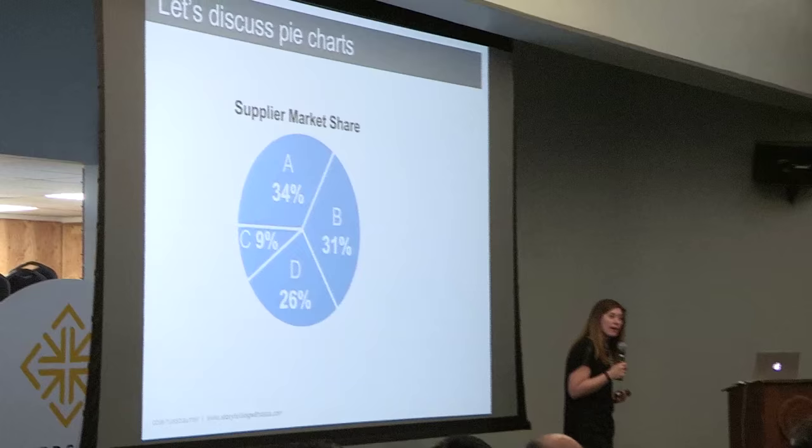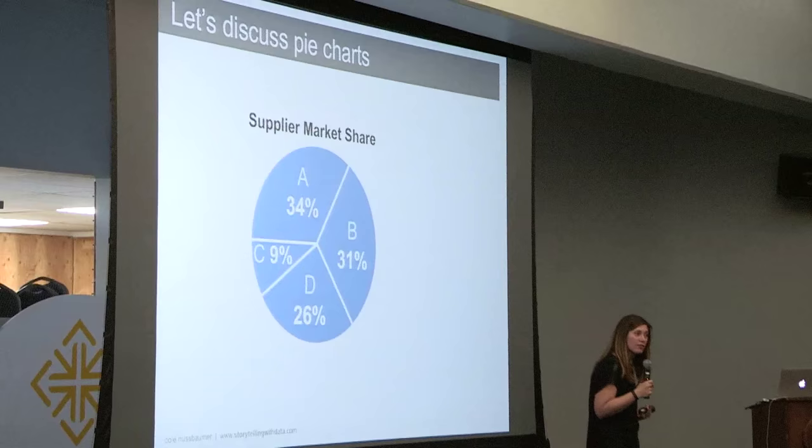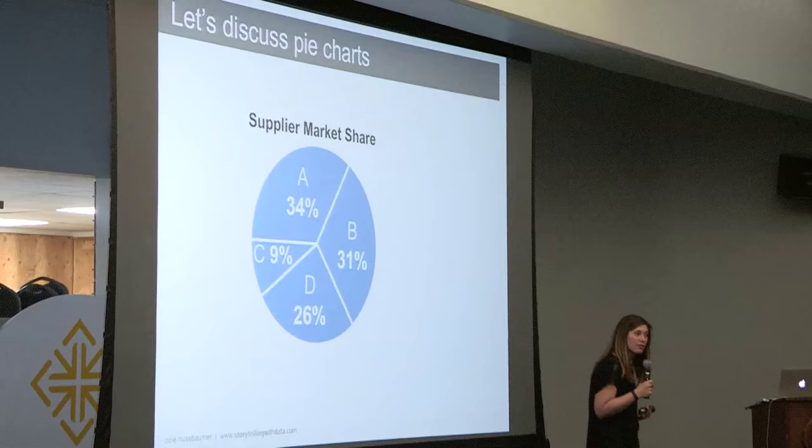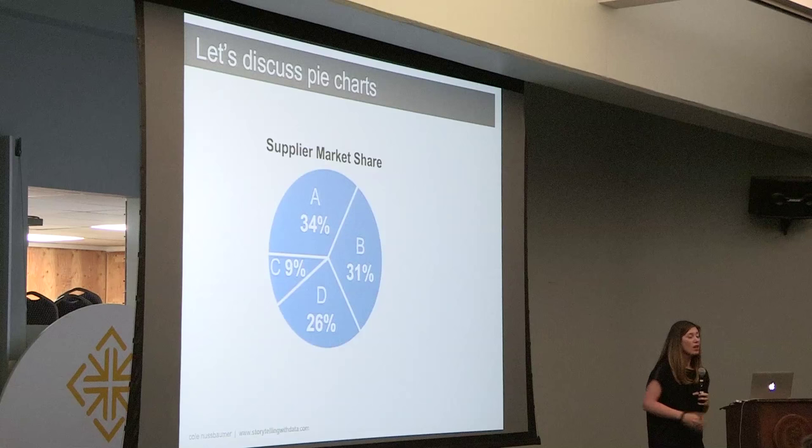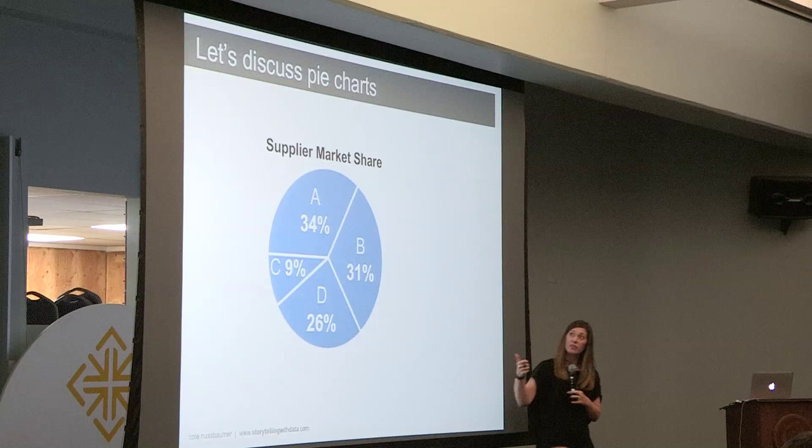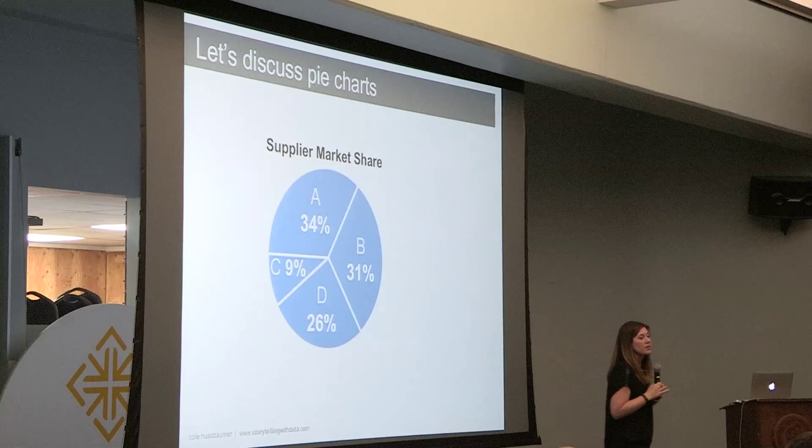If you're absolutely married to the idea of a pie chart, let's at least improve it. We've flattened it, taken away the 3D perspective that was distorting the values, removed the differences in color that weren't adding information, and organized the segments starting with the greatest at top left, working clockwise from greatest to least. I've also labeled the segments directly with numeric values and categories, reducing the work of going back and forth between the graph and the legend. But I'd also encourage you to think about not using a pie chart at all.